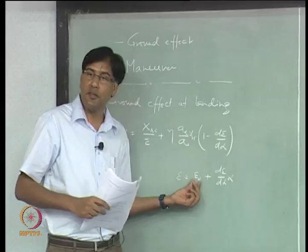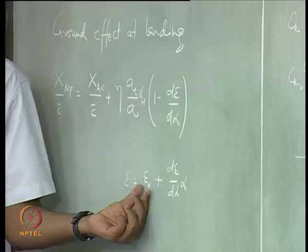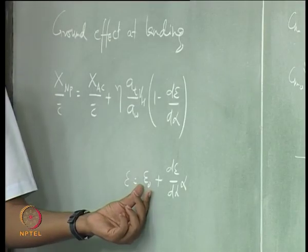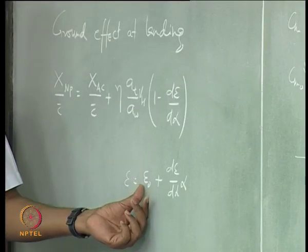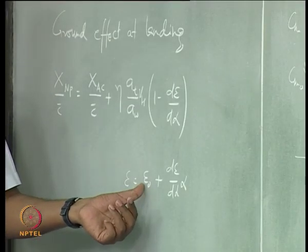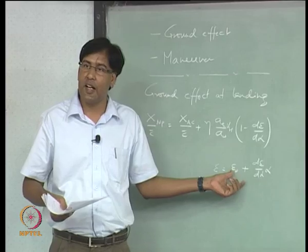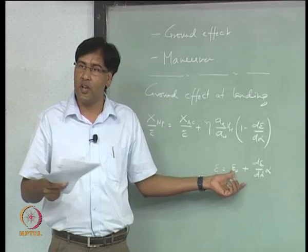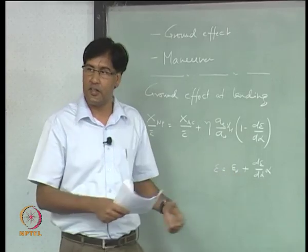Because of the downwash term which disappears when you are close to ground, the angle of attack at the tail is going to increase.